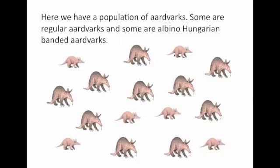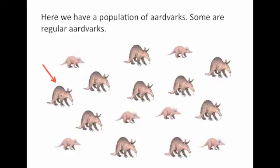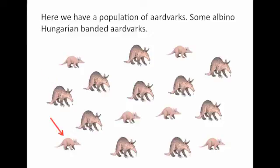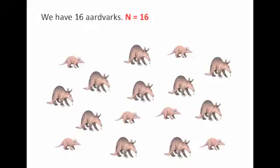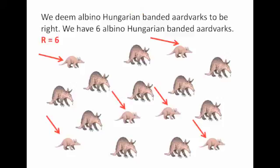To illustrate this, here we have a population of aardvarks. Some of these are regular aardvarks and some are albino Hungarian banded aardvarks. In this population, we have 16 aardvarks — you can count them if you want. We have two possibilities: regular aardvarks and albino Hungarian banded aardvarks. For our case, we're going to say that the albino Hungarian banded aardvark is the right answer. So out of 16 possible aardvarks, we have six which are right.